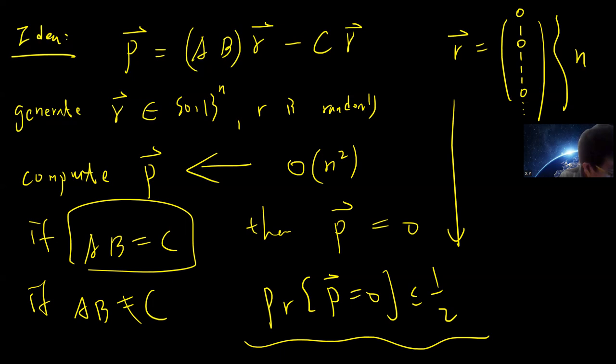So the idea is that let's just write D equals AB minus C. Suppose D is non-zero. So that means that there is an i,j such that D_ij is not 0. D is the matrix and the component of D is D_ij.